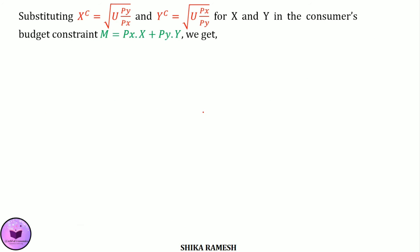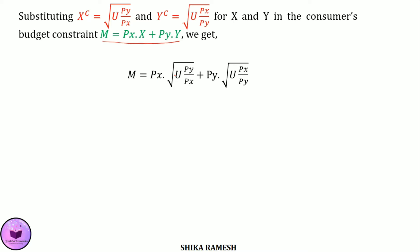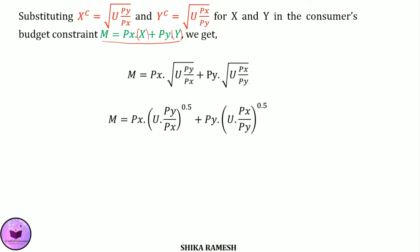Substituting these two equations into the budget constraint, we get M = PX · √(U · PY/PX) + PY · √(U · PX/PY). These equations can be rewritten as M = PX · (U · PY/PX)^0.5 + PY · (U · PX/PY)^0.5.